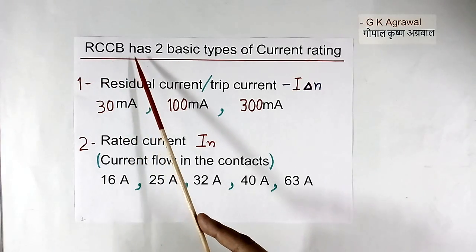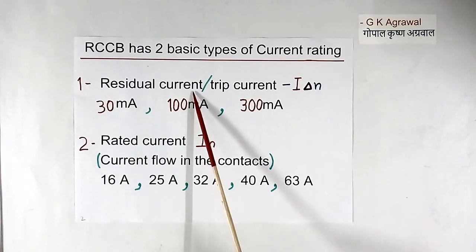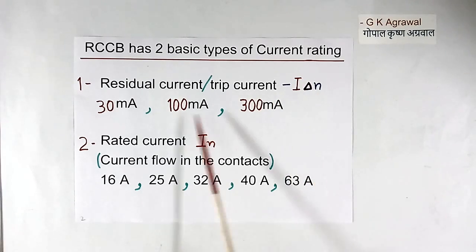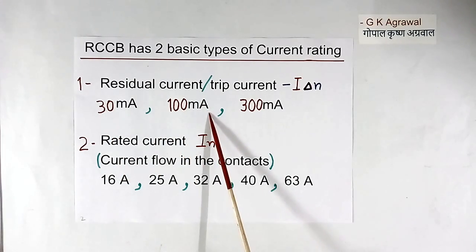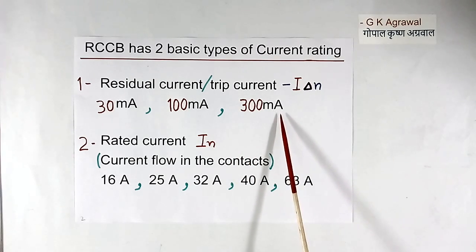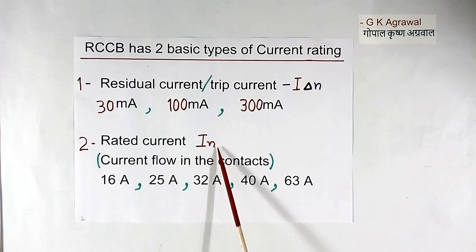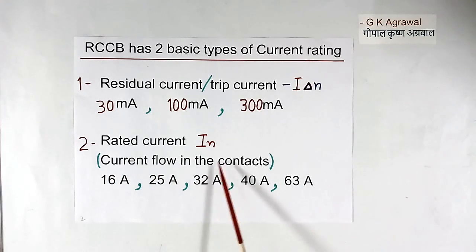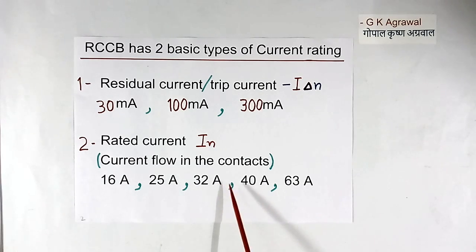Every RCCB has 2 basic types of current rating. First is the residual current, or trip current, which is also written as IΔN. This current rating may be 30 mA, 100 mA, or 300 mA. Second is the rated current, written as IN. This is the current which flows in the contacts, or the maximum current which can flow in the load. This may be 16 A, 25 A, 32 A, or 40 A.